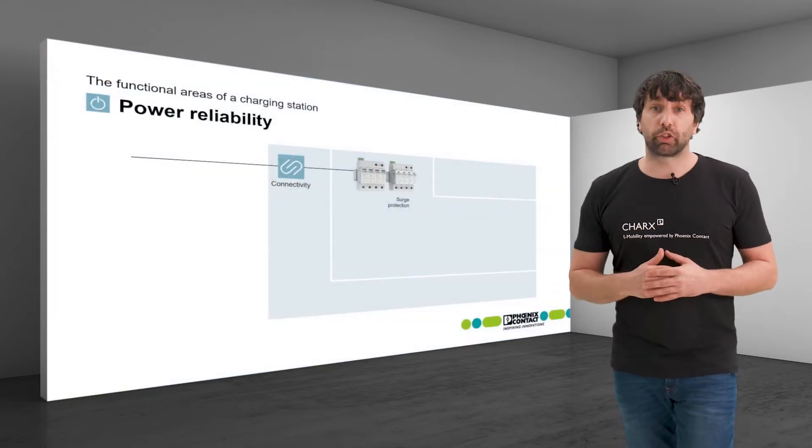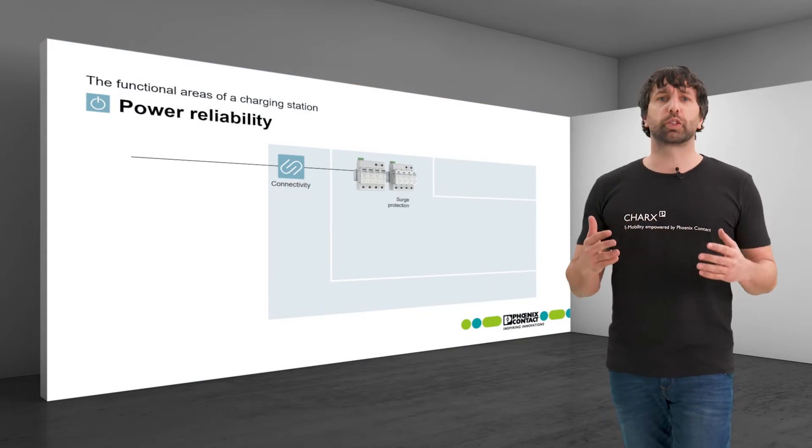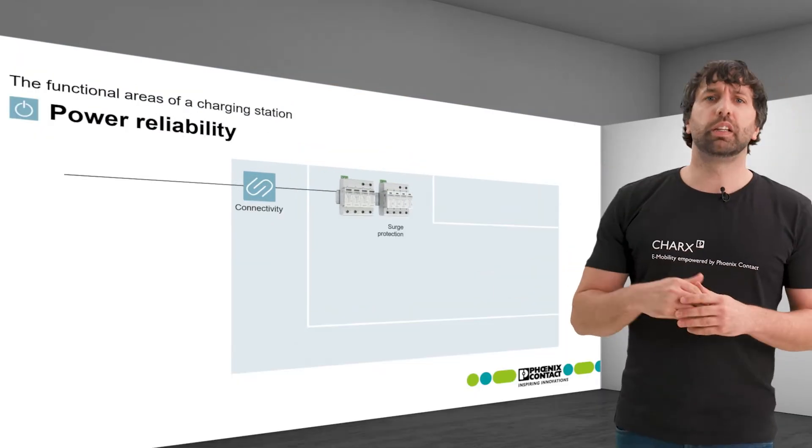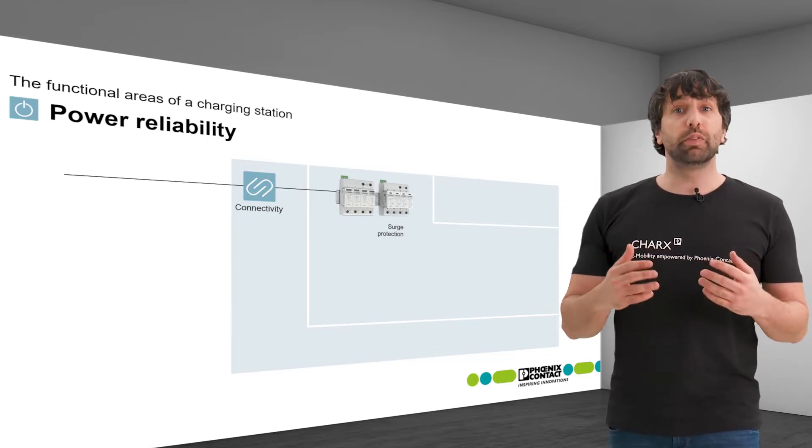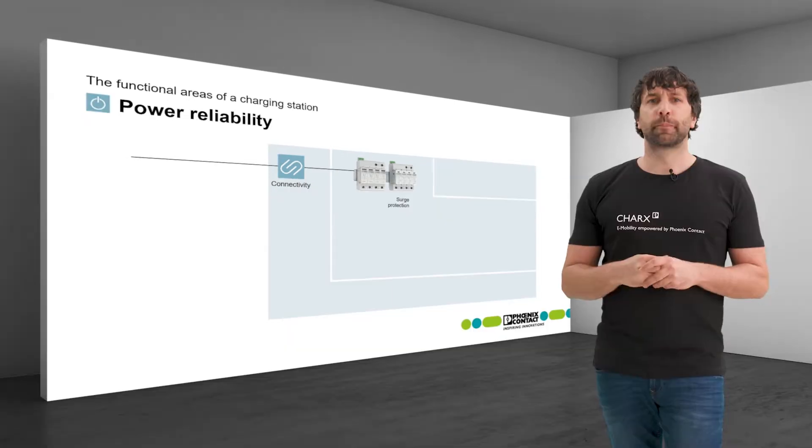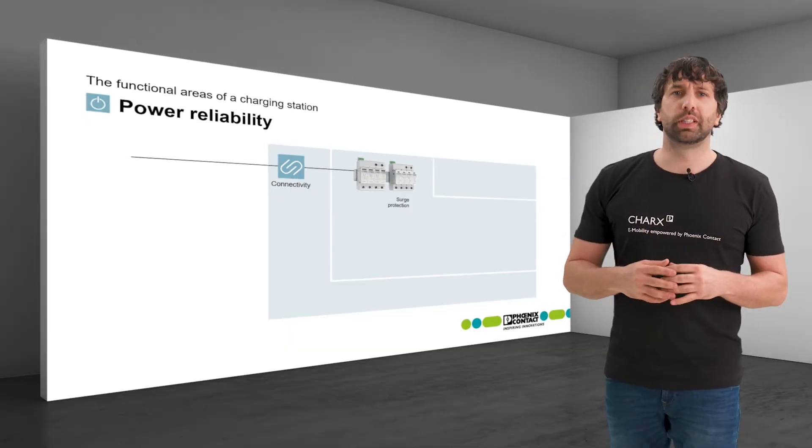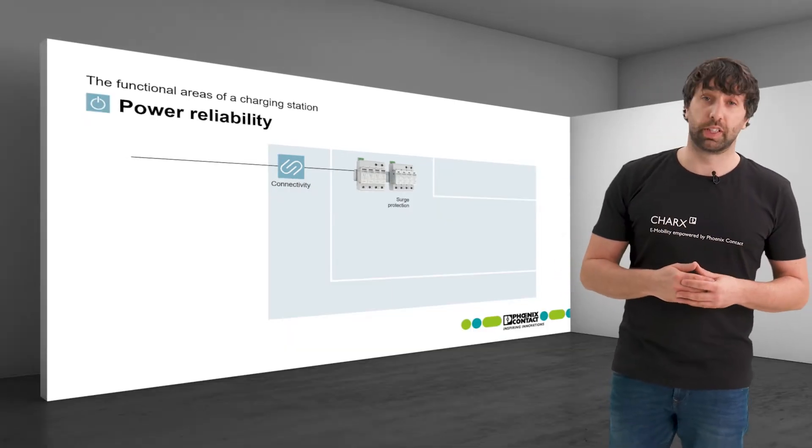Our optimal surge protection for this purpose is CHARX Protect. It ensures a secure and uninterrupted charging process even if there are overvoltages in the grid. This surge protection is designed especially for charging stations.